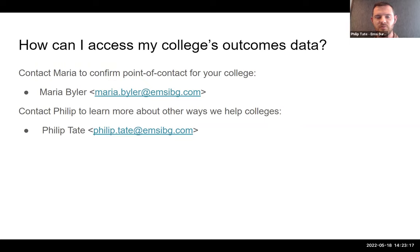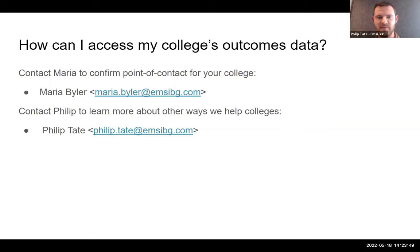Specifically, as it relates to how to get to your college's outcomes data, you're going to want to get in touch with Maria Beiler, who's on the call here today. That's her email address. And if you're curious about other ways we're helping colleges outside the scope of this particular project, my contact information is there too. I'm going to turn it over to my colleague Luke Bruno, who's going to walk us through the actual information — the types of information available and how you can use this as it relates to the Guided Pathways framework.